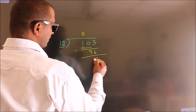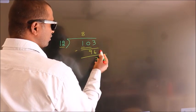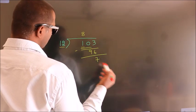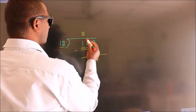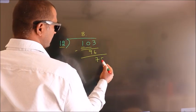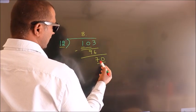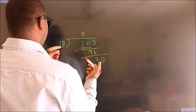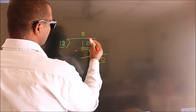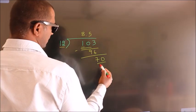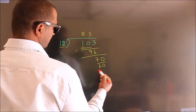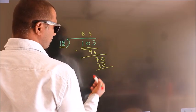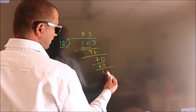After this, no more numbers to bring down. So what we do is, we put a dot and take 0. So 70. A number close to 70 in the 12 table is 12 times 5, which is 60. Now we subtract, we get 10.